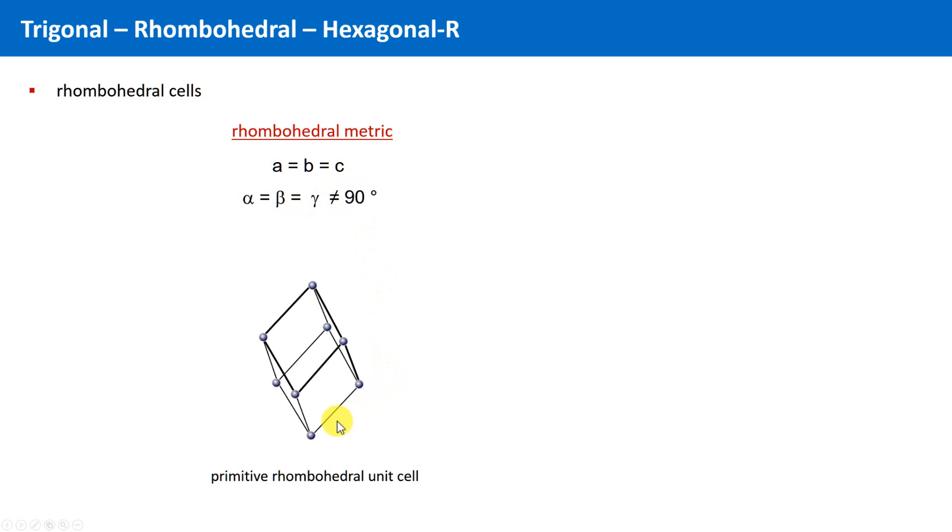We have here the lattice vectors a, b and c. The angles between the vectors are all the same, but not 90 degrees. And the threefold axis of rotation runs in this direction along the body diagonal.